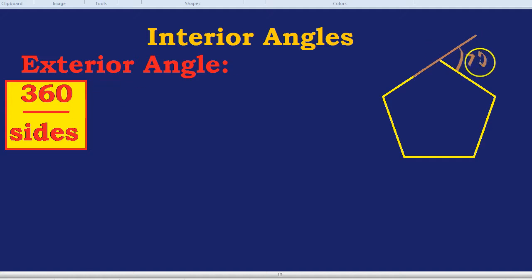In this video, we're going to talk about interior angles. Interior is inside. In this case, we're going to imagine we don't know what the exterior angle is and we have to find out using the method 360 divided by the number of sides. And we're going to use that information to find the interior angle.